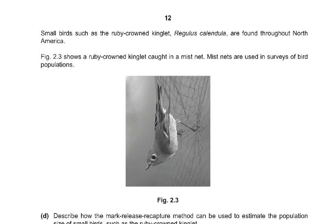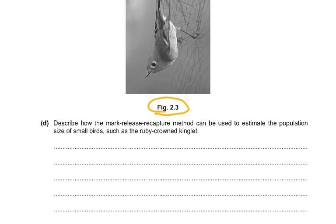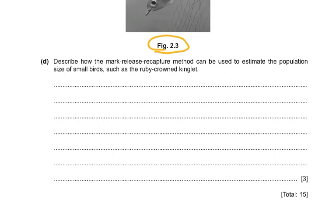Now coming to the last part of the question. Small birds such as the ruby-crowned kinglet, Regulus calendula, are found throughout North America. Figure 2.3 shows this beautiful bird — a ruby-crowned kinglet caught in a mist net. Mist nets are used in surveys of bird populations. Describe how the mark-release-recapture method can be used to estimate the population size of small birds such as the ruby-crowned kinglet. Catch the birds within the area, count the total captured, then mark and release them. Then catch a second sample and count the total number of birds and the number of marked birds.